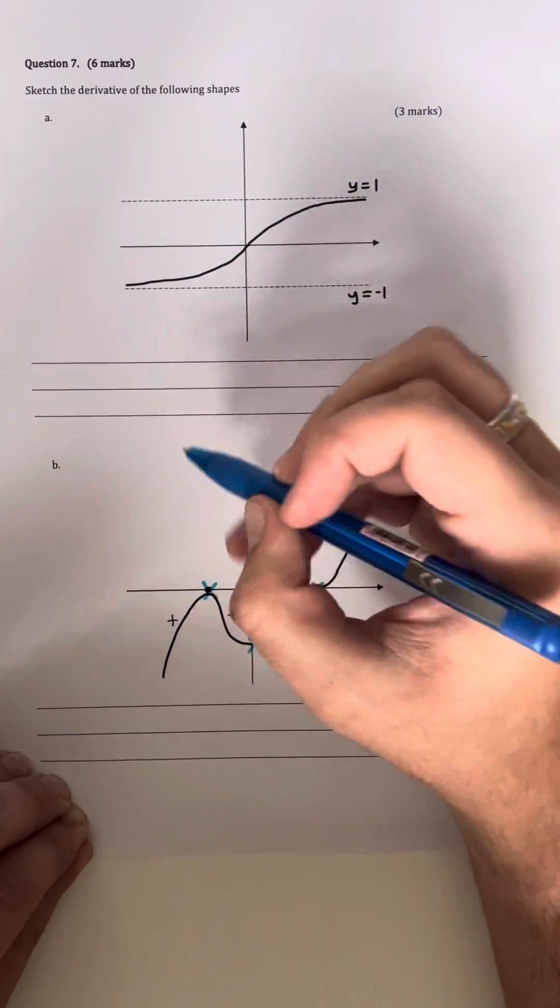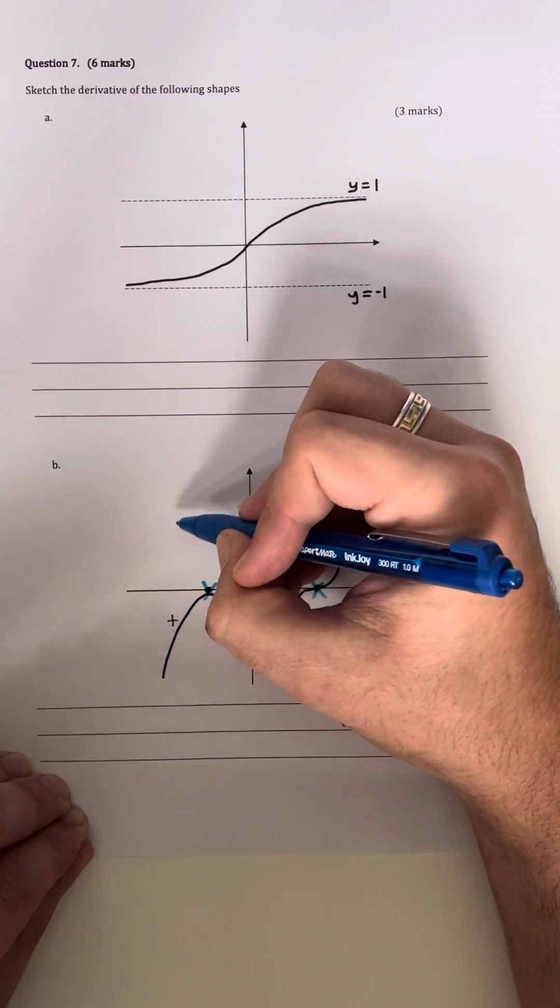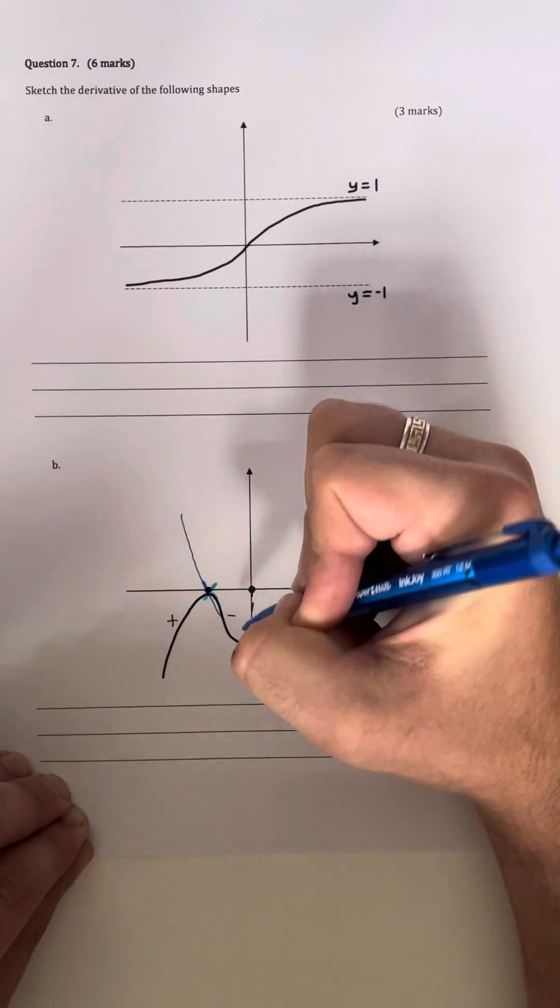So we start off with a positive gradient, therefore we're going to be in the positive region, and I'm going to curve down to the negative region after passing through that intercept point. So something along the lines of that.